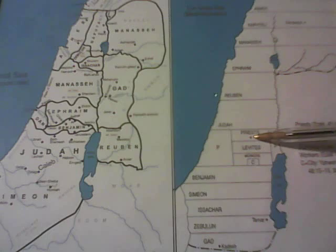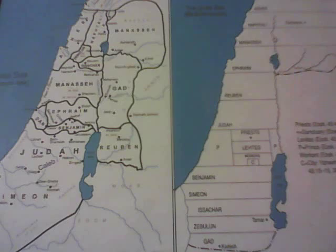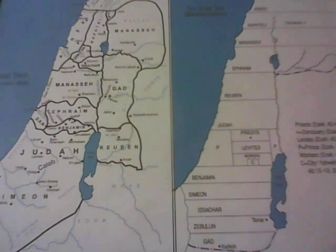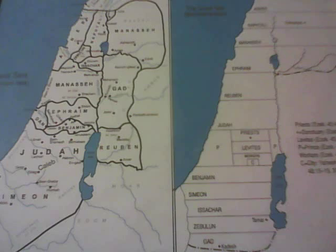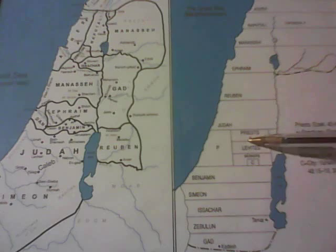Still in the priest area, looking at Ezekiel 48:10 and 48:12. 48:10 reads: 'To the priests the holy district shall belong: on the north 25,000 cubits in length, on the west 10,000 in width, on the east 10,000 in width, and on the south 25,000 in length. The sanctuary of the Lord shall be in the center.' Verse 11: 'It shall be for the priests of the sons of Zadok, who are sanctified, who have kept my charge, who did not go astray when the children of Israel went astray, as the Levites went astray.' Verse 12: 'This district of land that is set apart shall be to them a thing most holy by the border of the Levites.'